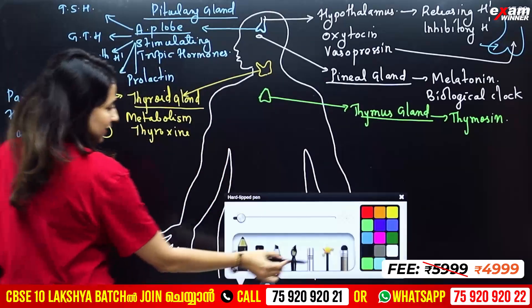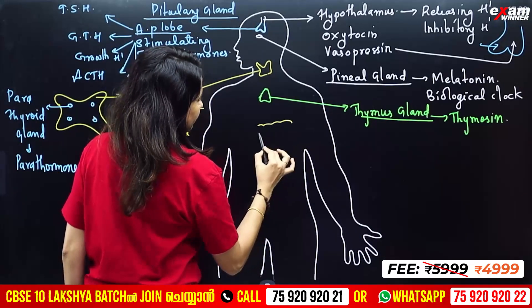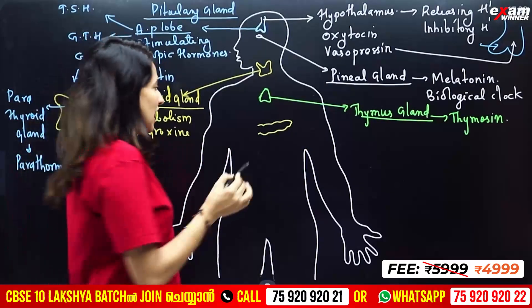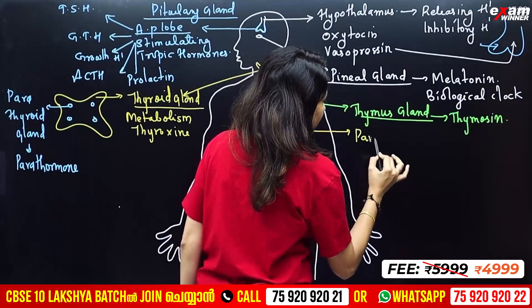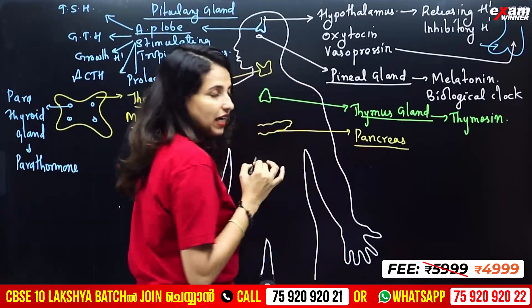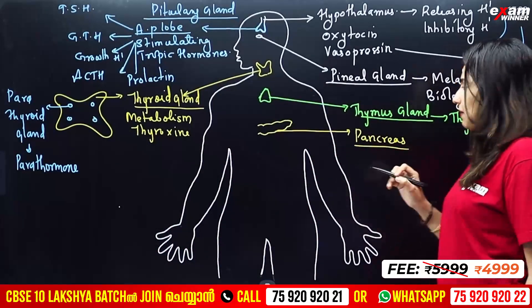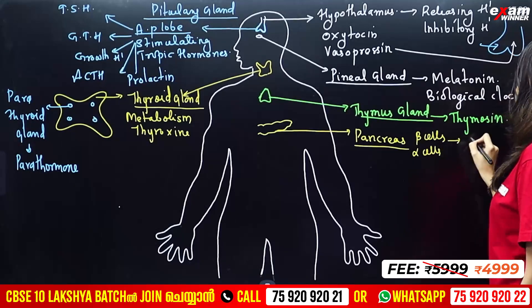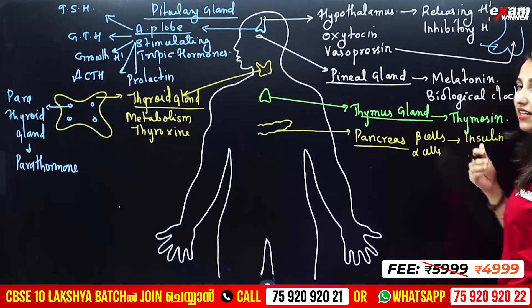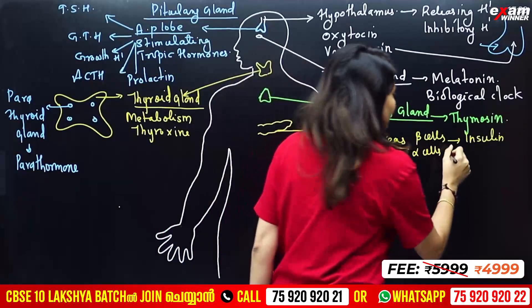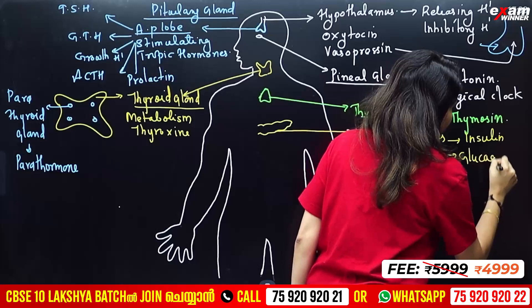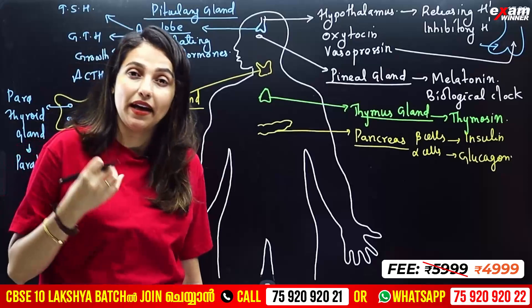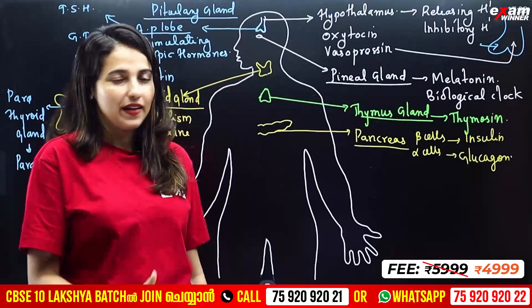The pancreas gland secretes both enzymes and hormones. It has two types of cells: beta cells and alpha cells. Beta cells produce insulin, which is secreted when blood glucose level is increased. Alpha cells regulate blood glucose by producing glucagon.